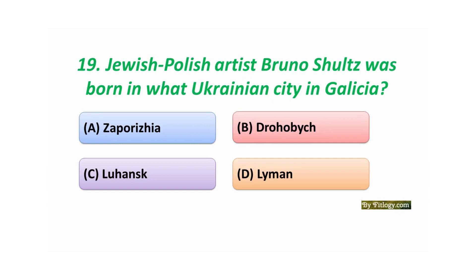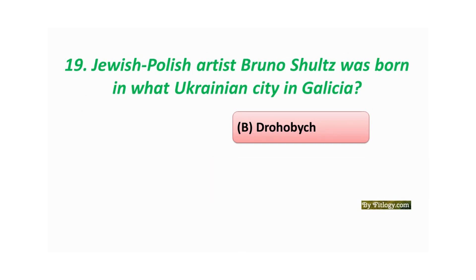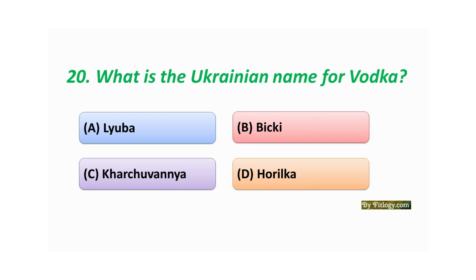Question number nineteen: Jewish Polish artist Bruno Schultz was born in what Ukrainian city in Galicia? Option A: Zaporizhzhia. Option B: Drohobych. Option C: Luhansk. Option D: Lviv. The correct answer is Option B: Drohobych.